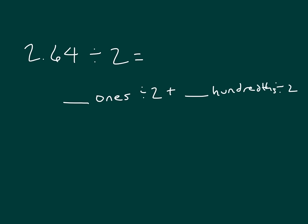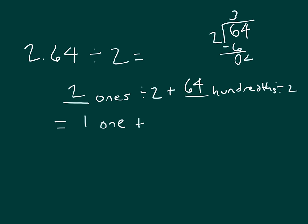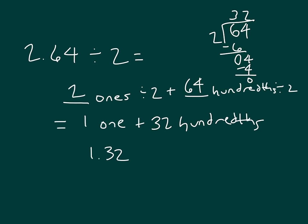Another problem for us to solve: 2 and 64 hundredths divided by 2 equals what? It equals 2 ones divided by 2 along with 64 hundredths divided by 2. 2 ones divided by 2 is just 1 one, along with 64 hundredths divided by 2. 64 divided by 2 is 32, so we have 32 hundredths. So we have 1 one along with 32 hundredths: 2.64 divided by 2 equals 1.32.